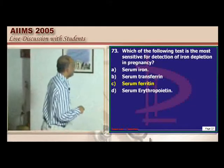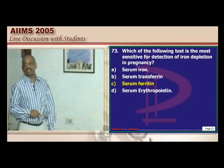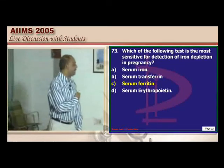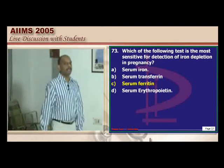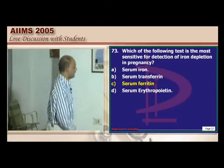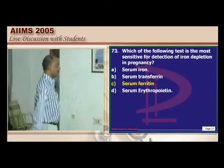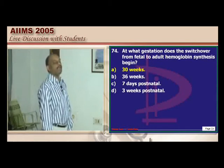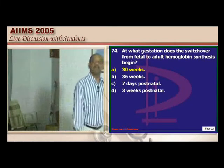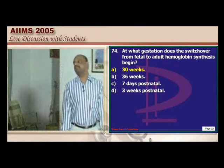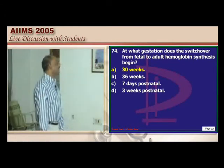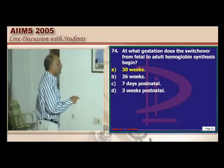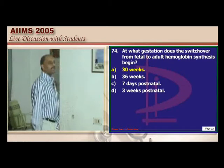If you have done a bloody tap during amniocentesis, phosphatidylglycerol is the marker that can still help you, as bilirubin OD measurement will become fallacious. Whether pregnant or non-pregnant, ferritin is considered the earliest and most reliable indicator of iron deficiency — the golden rule that shall not be forgotten.